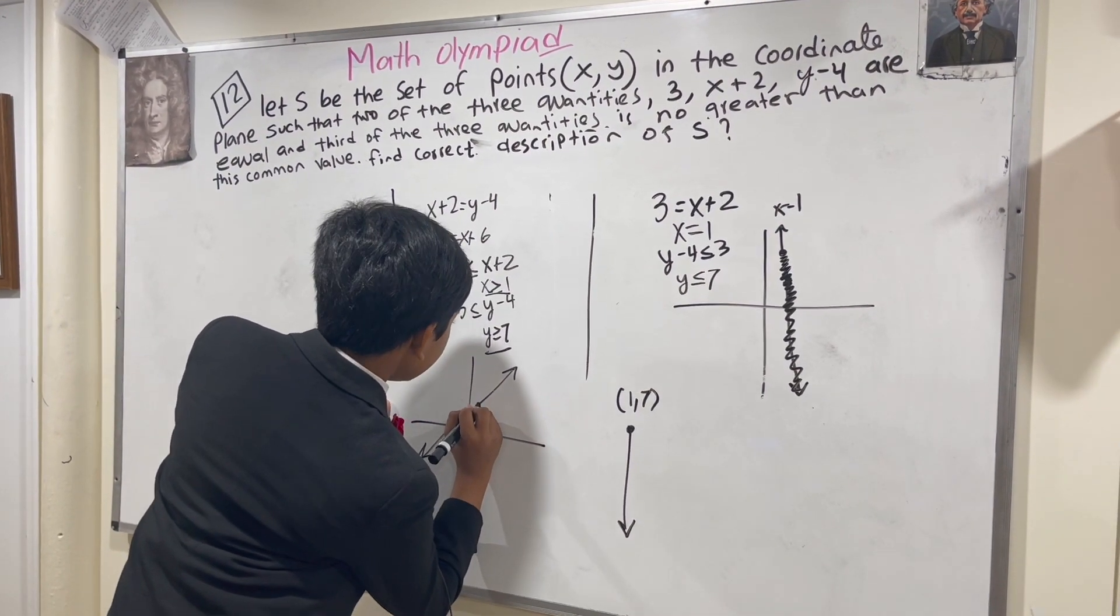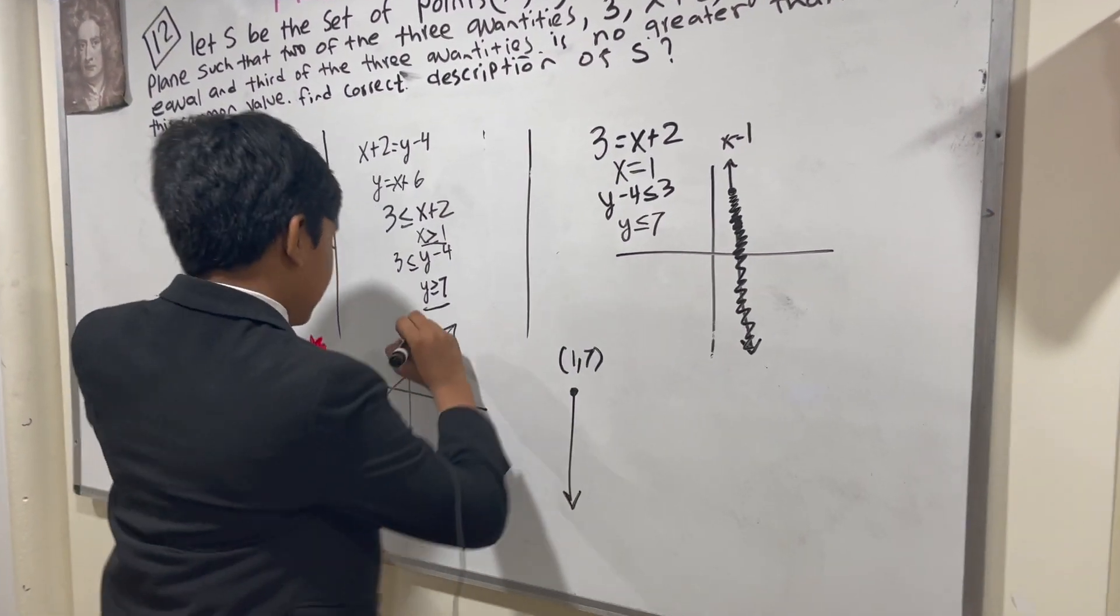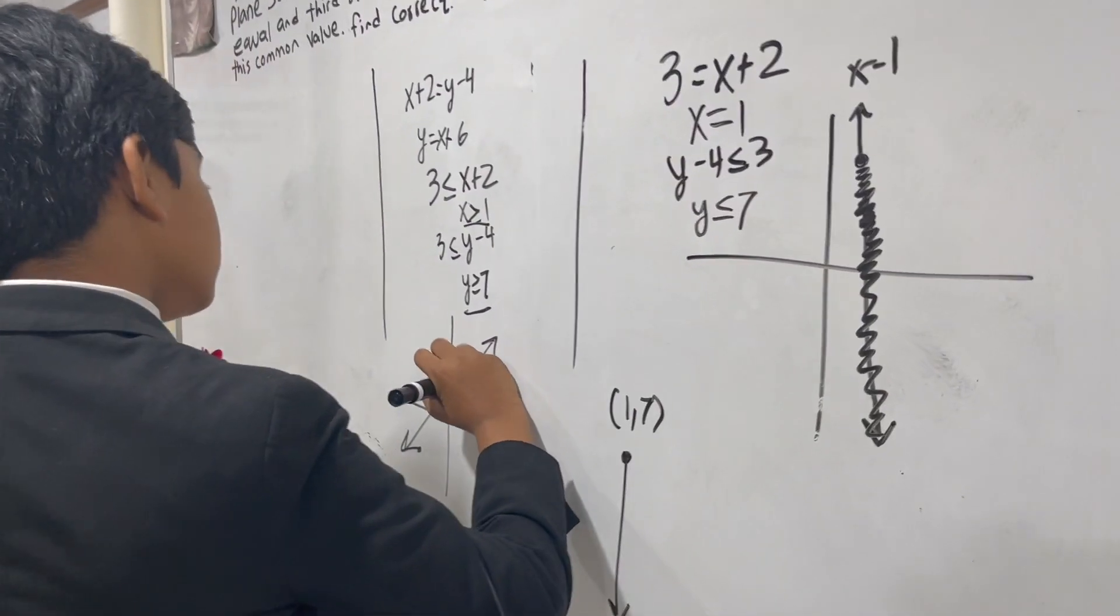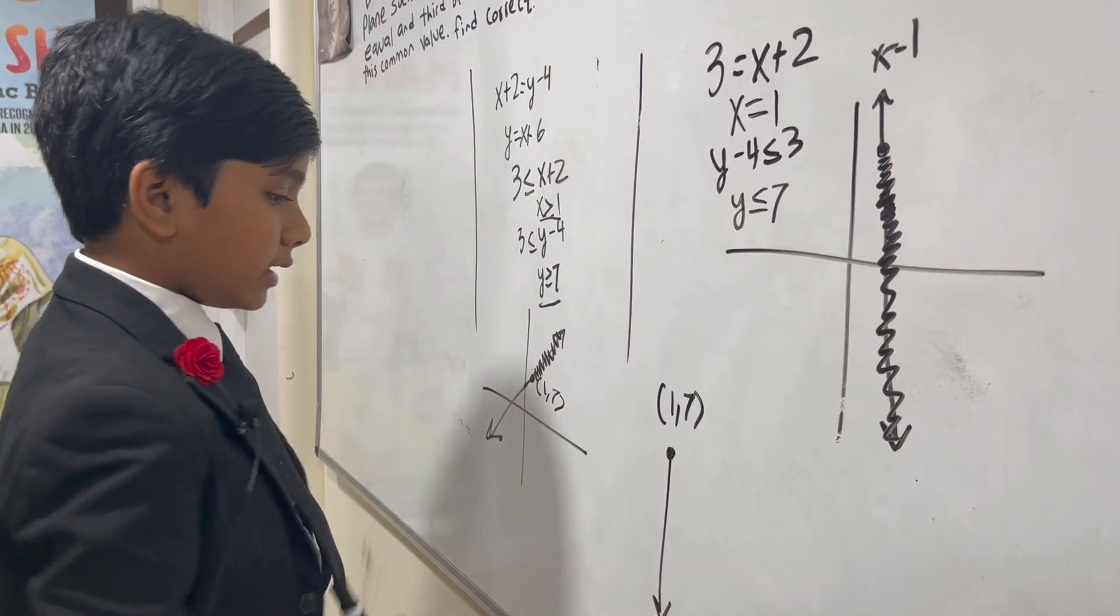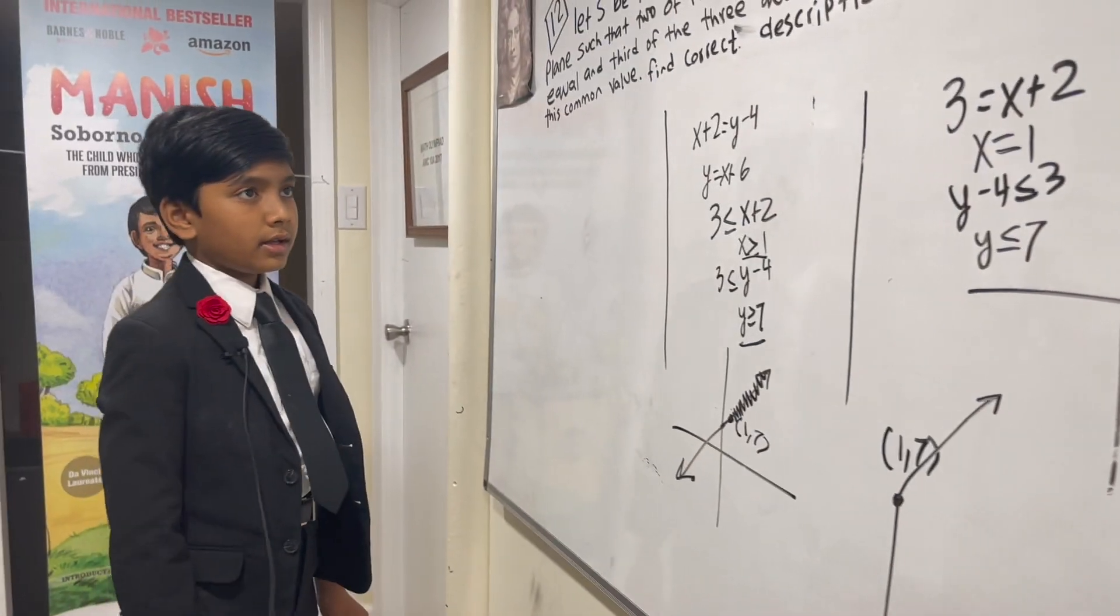starts about here, at 1, 7, and continues onward. So it's another ray with endpoint 1, 7.